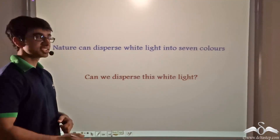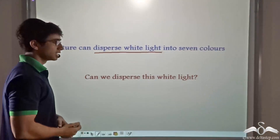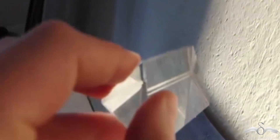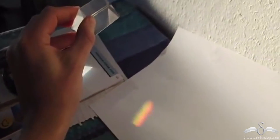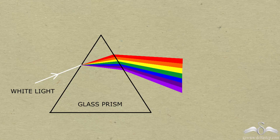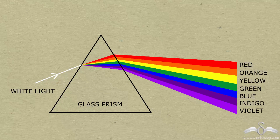We find that nature can disperse white light into its seven colors. To see how we can do it, let us look at an interesting video. In this video, an instrument known as a prism is used. With the help of a prism, we are able to break white light into its seven colors. This prism is kept in the face of sunlight and the different colors are obtained on the wall placed opposite to the prism. As you can see in the animation, refraction takes place and white light is broken into seven colors.